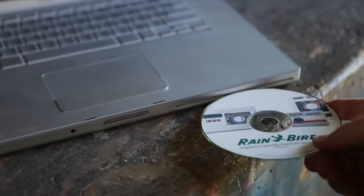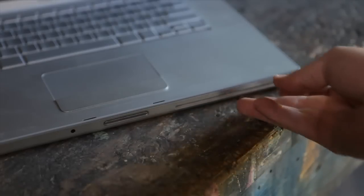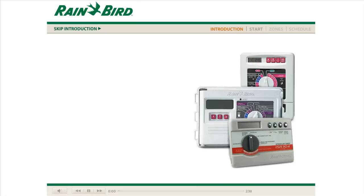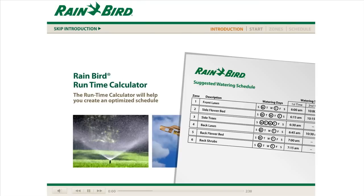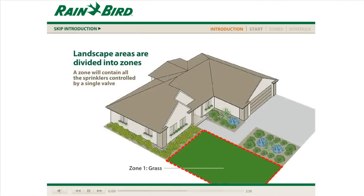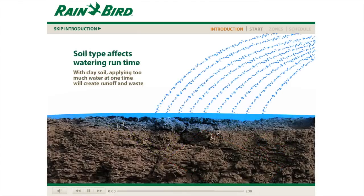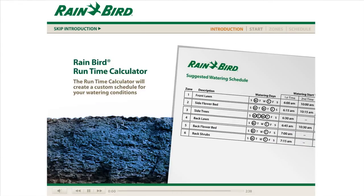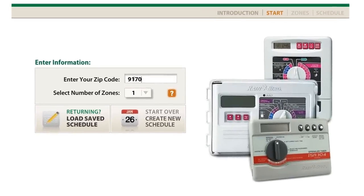For even more precise watering, slip the smart scheduler CD included with your controller into your PC. You'll create a water efficient schedule that's custom tailored to your geographic area, as well as your plant types and soil conditions. To learn more about this easy to use software, just watch our smart scheduler video.